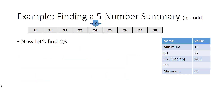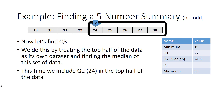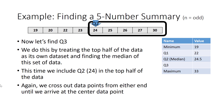We repeat this process to find Q3, again including our median in the top half of our data. We cross out values and find that Q3 is 26. We now have our five-number summary for the odd data set.